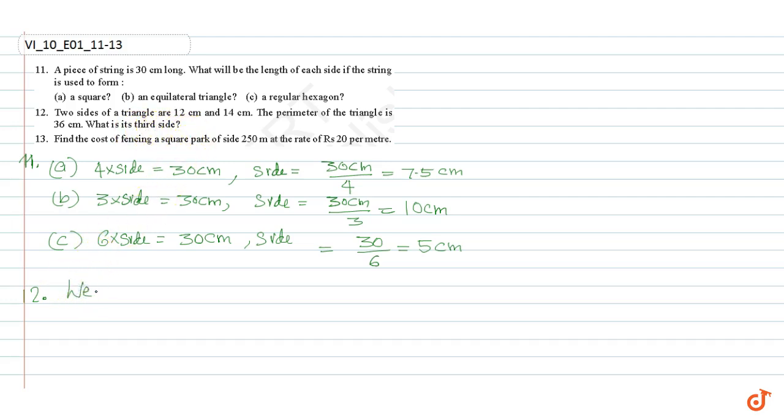We know that perimeter of a triangle is equal to sum of length of sides. Therefore, it is given to be 12 plus 14 plus side equal to 36 cm.